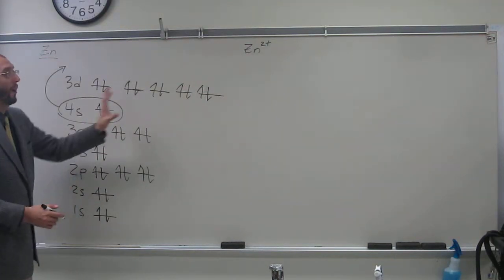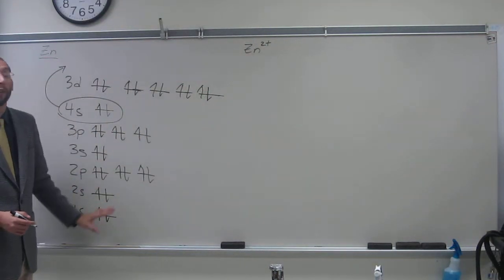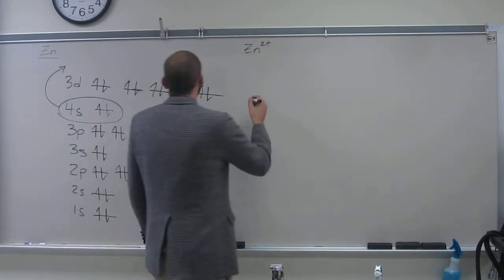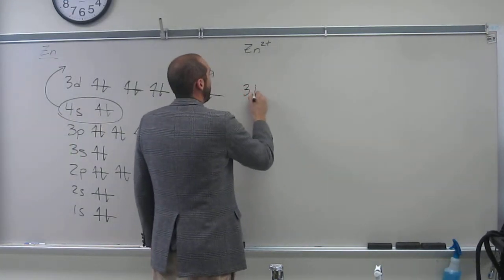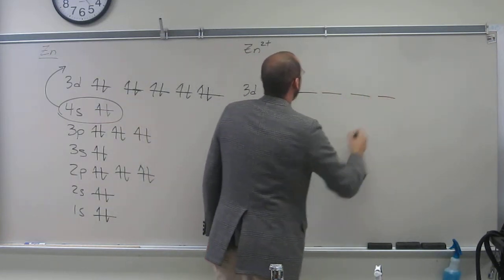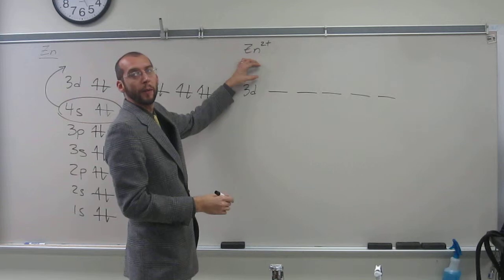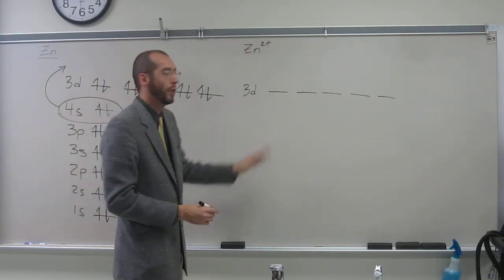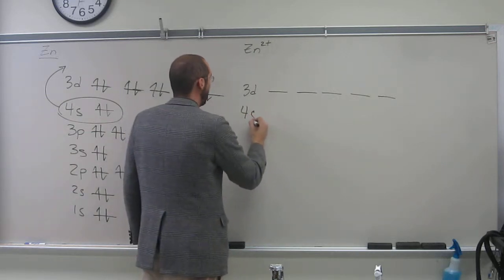So if I wanted to draw the electron configuration of zinc 2 plus, it would be something like this. And again, some people would rather you put the 4S up here. Since you guys are in gen chem, we're just going to deal with it being the same way. We just know that the 4S are in.